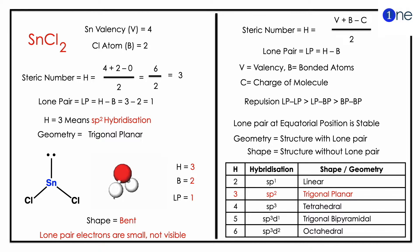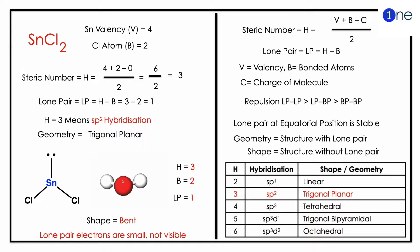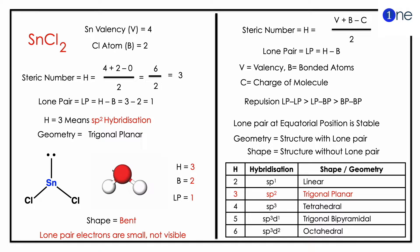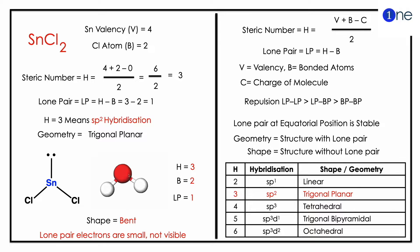To find the hybridization, you should find the steric number, which is H equals V plus B minus C, whole divided by two. V represents valence electrons — tin is from the carbon group, so V equals four. B is the bonded atoms; you have two chlorine atoms, so the steric number is four plus two minus zero, whole divided by two.